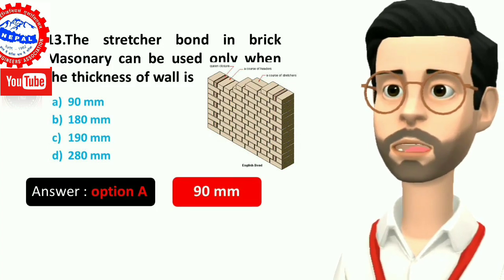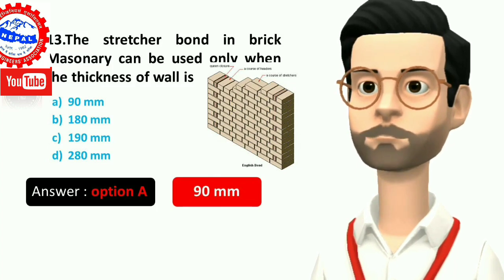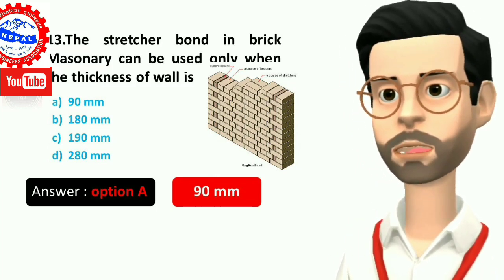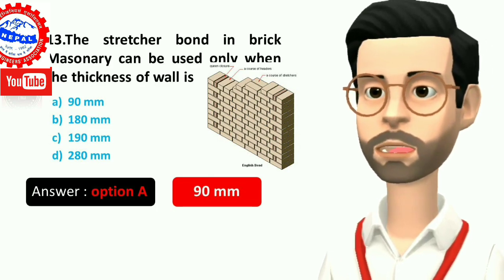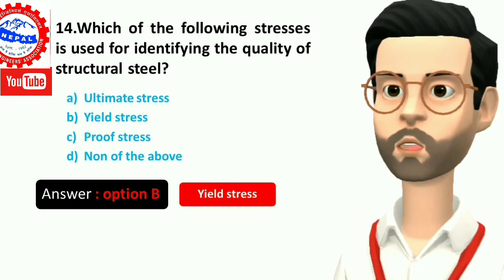Thirteen, the stretcher bond in brick masonry can be used only when the thickness of wall is: A) 90 millimeters, B) 180 millimeters, C) 190 millimeters, D) 280 millimeters. Answer is option A, 90 millimeters.